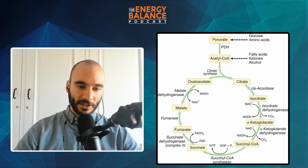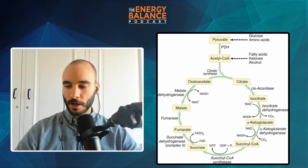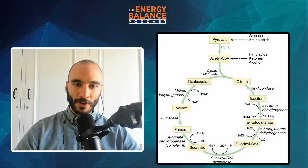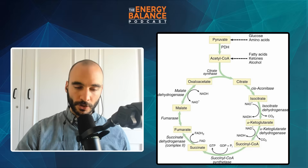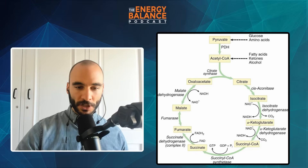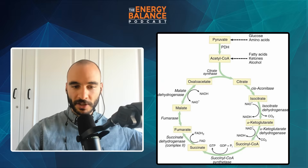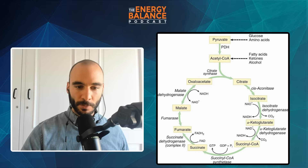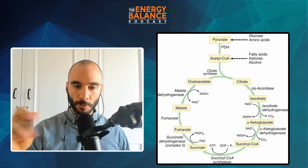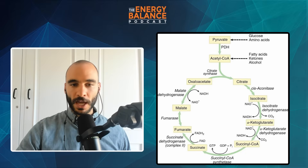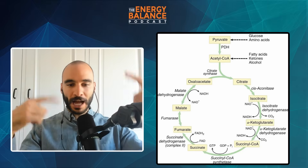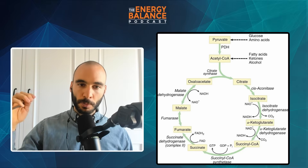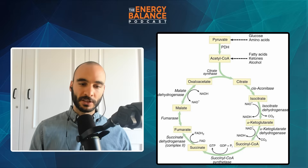The problem with pyruvate dehydrogenase being shut down is that pyruvate is the main product created from glycolysis. So if pyruvate dehydrogenase is shut down because you're burning a bunch of fatty acids, you can't feed pyruvate — which is created from the splitting of glucose in glycolysis — into the Krebs cycle. If you can't feed glucose into the Krebs cycle, there are only so many other places it can go, including back up glycolysis. The fatty acids produce acetyl-CoA and continue to run the Krebs cycle, while the glucose continues to be blocked.